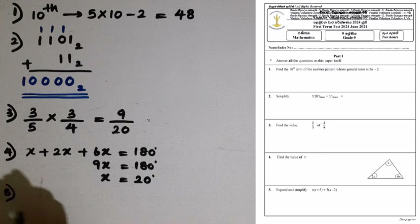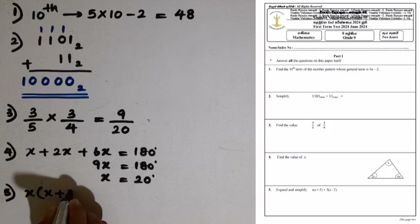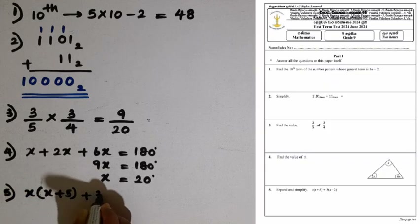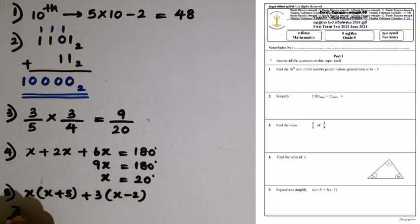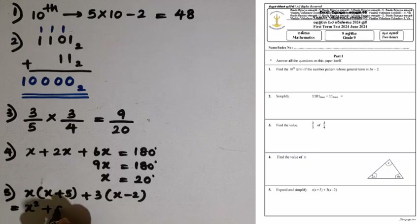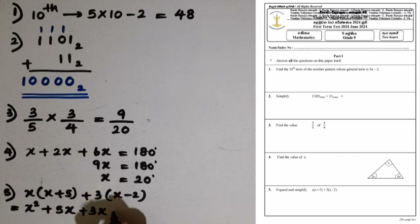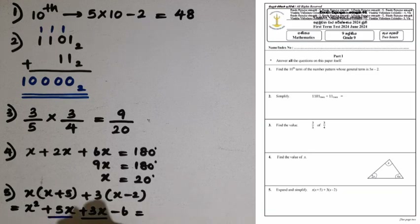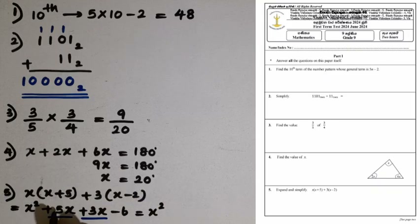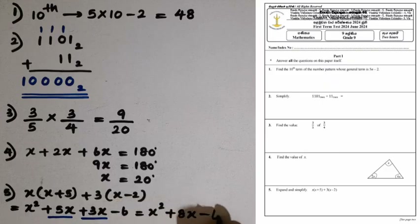Question number 5: expand and simplify x times (x plus 5) plus 3 times (x minus 2). We remove the brackets first: x times x is x squared, x times 5 is plus 5x, 3 times x is plus 3x, and 3 times minus 2 is minus 6. Now we add the like terms 5x and 3x to get 8x. The final answer is x squared plus 8x minus 6.